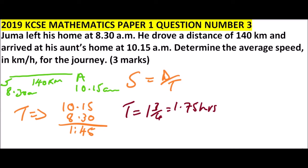So we can now get the speed. Speed equals distance 140 divided by time which is 1.75. This is in kilometers and this is in hours, so this will give us, when you divide that, you should be able to get 80 kilometers per hour. So that is how you work out that question.